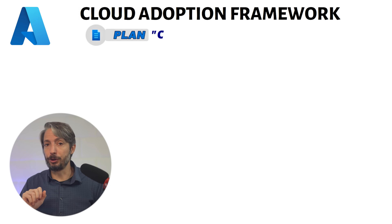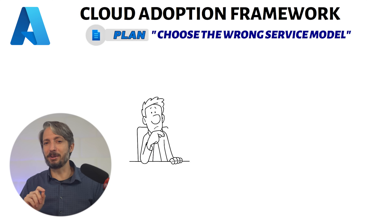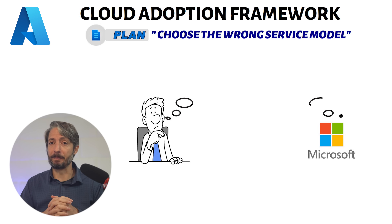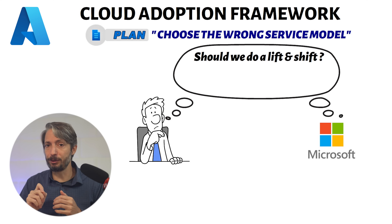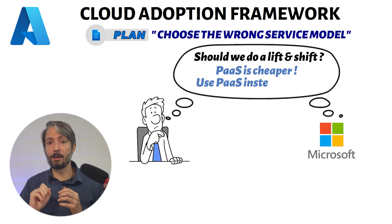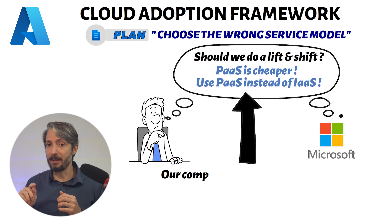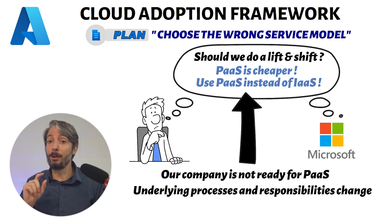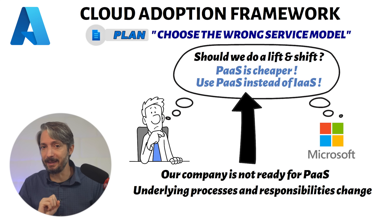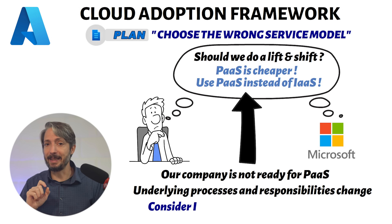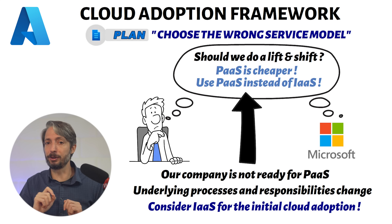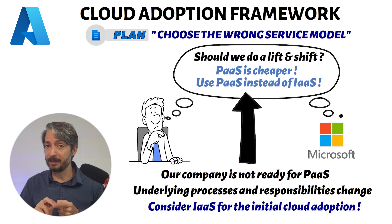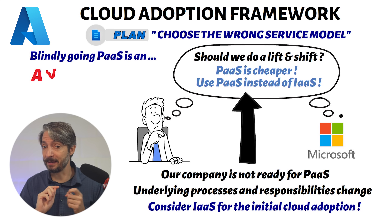The next anti-pattern is choosing the wrong service model, which is a fun one because it sometimes contradicts what Microsoft may tell you. There is often a general blanket statement that moving to a PaaS solution in the cloud will always cost less than an IaaS virtual machine solution. Companies often forget that it's not enough just to switch the technology to PaaS — all the underlying processes and responsibilities change when going from IaaS to PaaS, which also have to be considered. It may even be beneficial to start with IaaS in the cloud and then move on to PaaS solutions as the company matures. The Cloud Adoption Framework clearly states that blindly going PaaS is an anti-pattern.